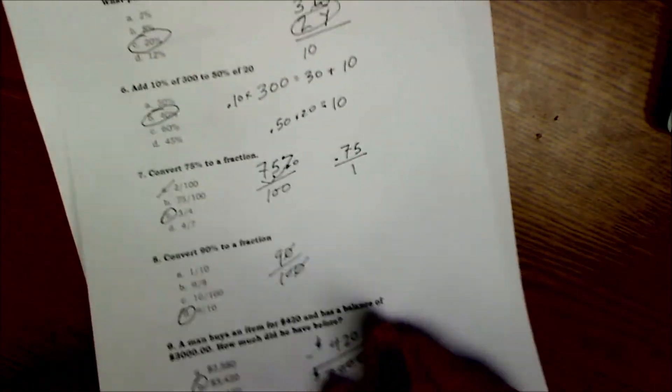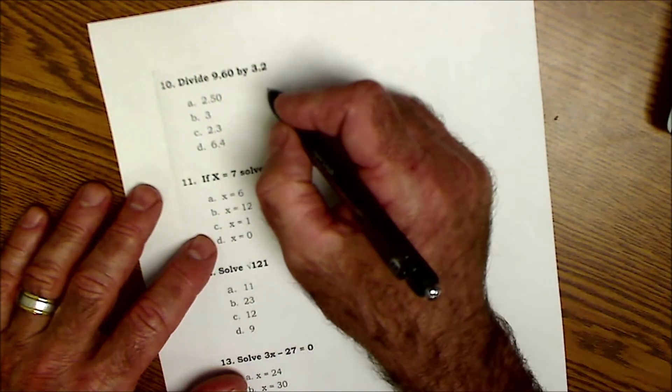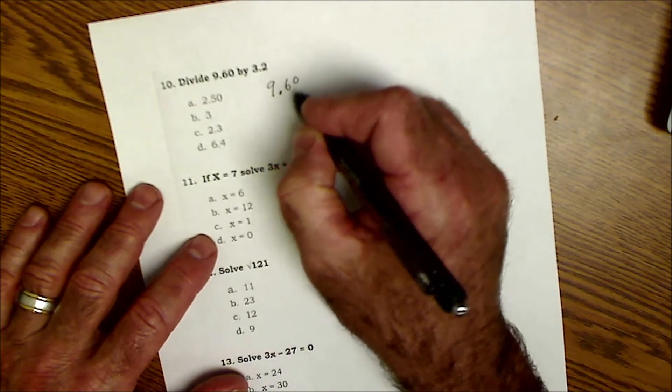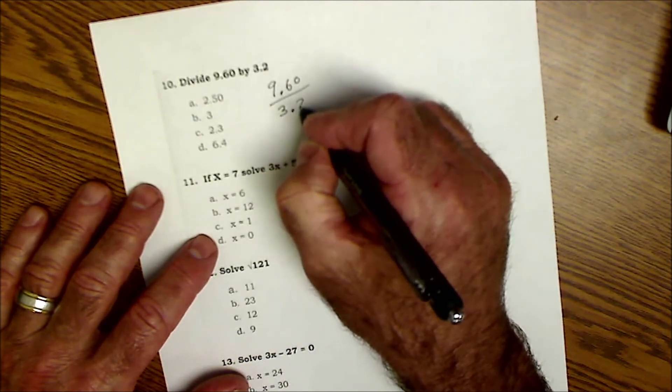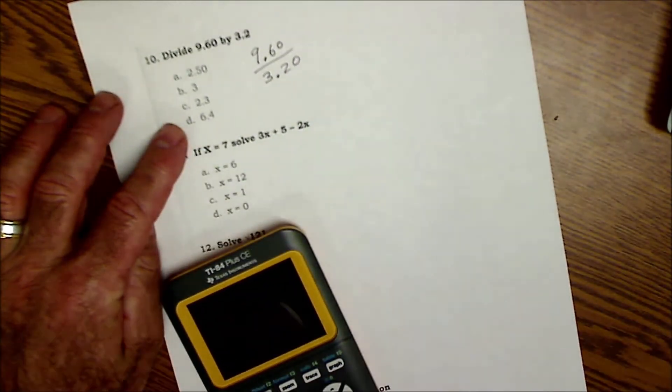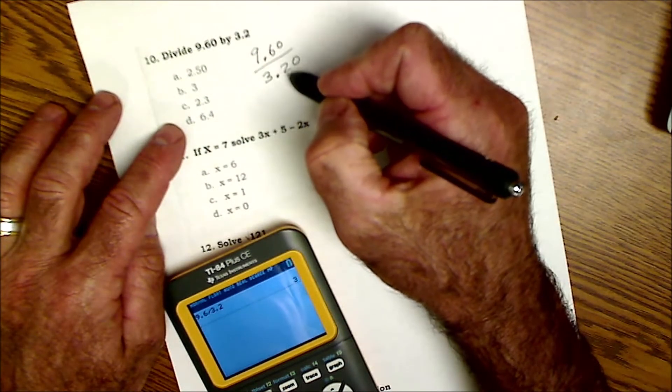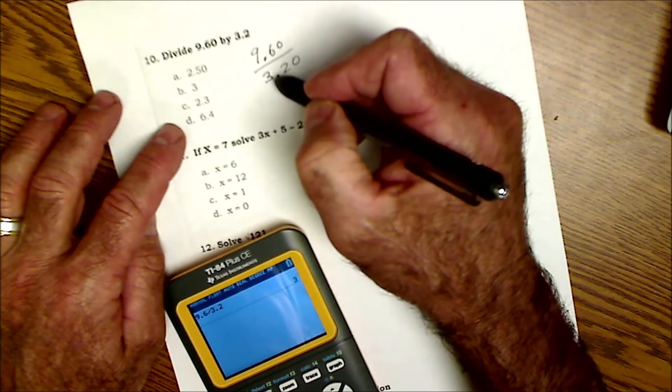All right, moving right along. Number 10: divide 960 by 3.2. You might be able to see that it's going to be equal to 300. You can do that on your calculator if you want. 960 divided by 3.2, and see it's 300. Or you could just see that 2 times 3 is 6, 3 times 3 is 9, so that's what gives you that answer there.